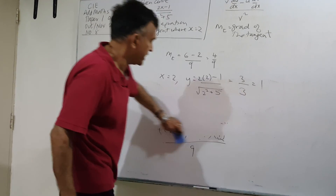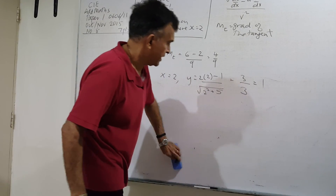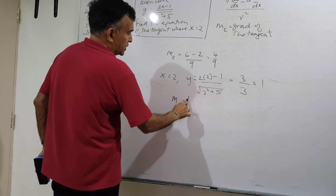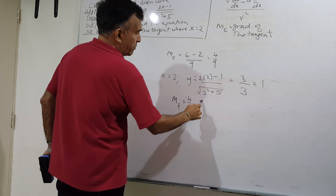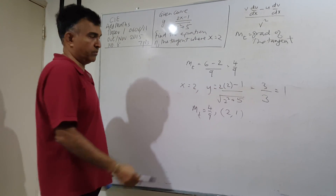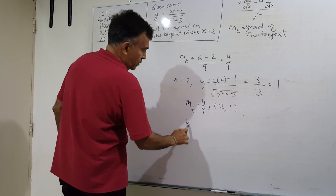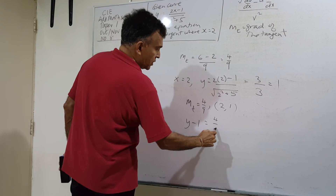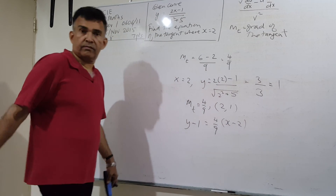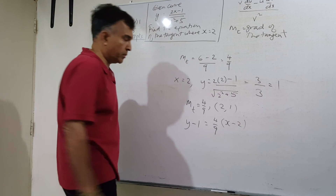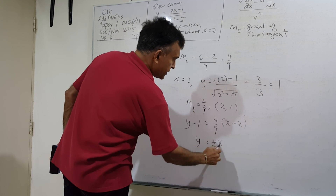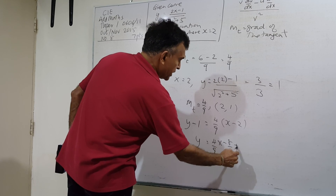Now we have the gradient mt equals 4/9 and the point (2, 1). We can write the equation of the line. Using coordinate geometry: y minus 1 equals (4/9)(x minus 2). Expanding: y equals (4/9)x minus 8/9 plus 1.